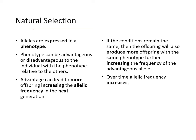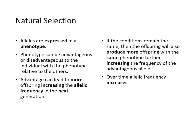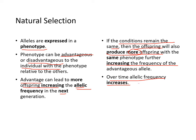Natural selection continued. Alleles are expressed as a phenotype, and the phenotype can be advantageous or disadvantageous to the individual. An advantage can lead to more offspring, which increases allelic frequency in the next generation. If conditions remain the same, those offspring will also produce more offspring with the same phenotypes, further increasing the frequency of the advantageous allele over time.